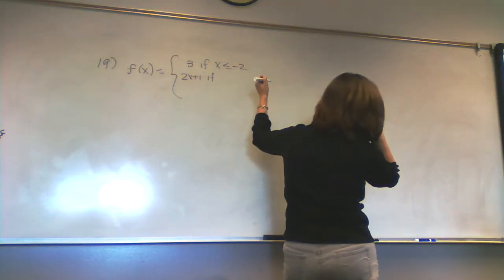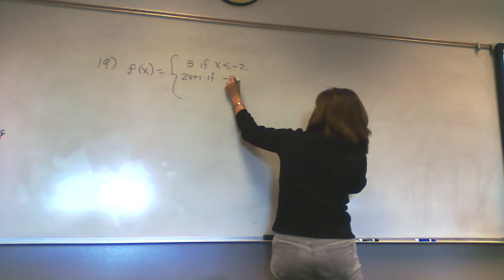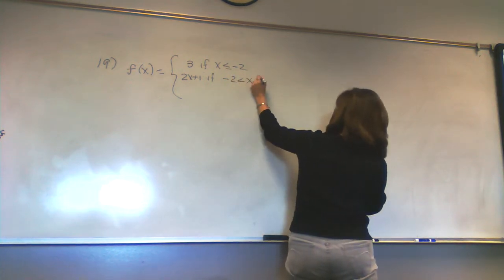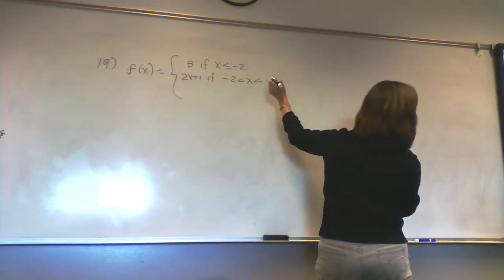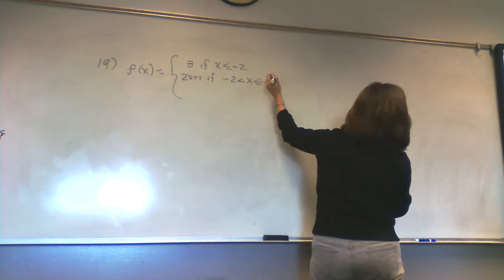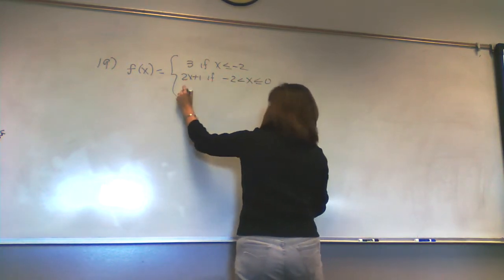I don't know why I'm writing it. It's right there. If negative 2 is less than x, is less than or equal to 0, and log base 2 of x.